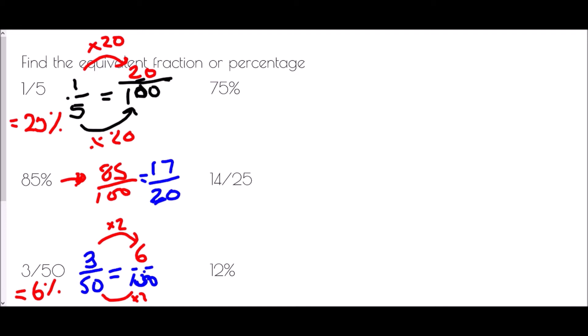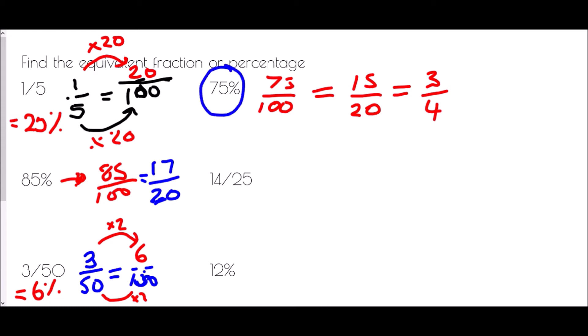For 75 percent as a fraction: write it over 100, giving 75 over 100, then simplify. Five goes into 75 fifteen times and into 100 twenty times, giving 15 over 20. Then 5 goes into those again: 3 over 4. So 75 percent is the same as three quarters — this is a very important relationship you are expected to know straight away.